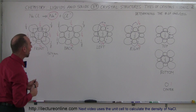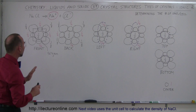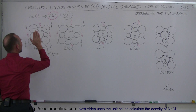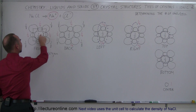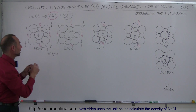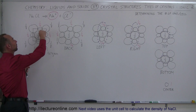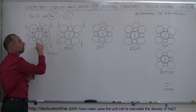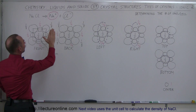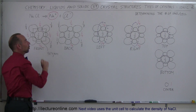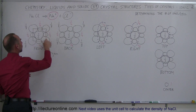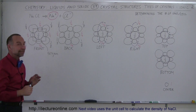Let's first figure out how many chlorine ions we have looking from each direction. Looking from the front, we have one in the face — half of it is sticking out, half is inside the cube, so we have half a chlorine ion. We also have four chlorine ions at the corners, and in each case only one-eighth of the chlorine ion sticks inside the cube, because each corner is a conjunction of eight cubes. So from the front we have: one-eighth, one-eighth, one-eighth, and one-eighth at the corners.